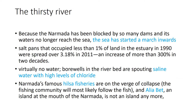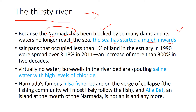The next thing: which river is called the 'thirsty river'? It is the Narmada River. Because the Narmada has been blocked by so many dams, the water no longer reaches the sea. Due to this, sea water has started to come inside the river itself - the sea has started marching inwards. Initially, only about one percent of land in the estuary was dedicated to salt, but now 3.18 percent has become salt water.